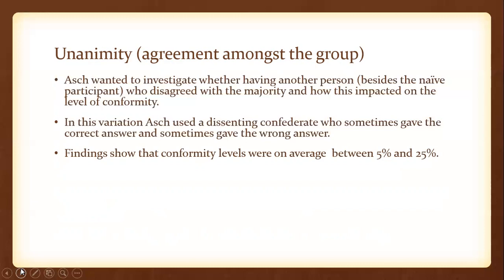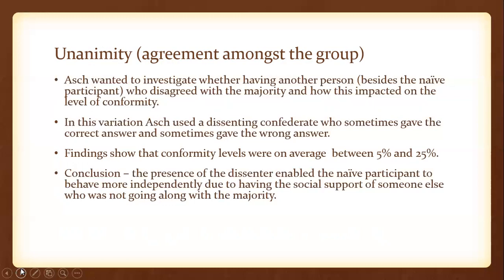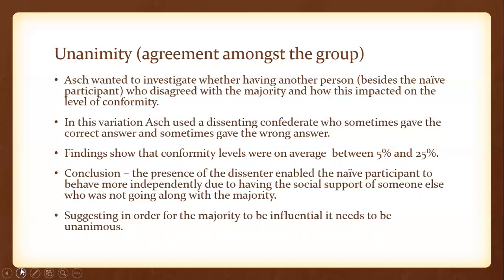Asch found that on average, conformity levels dropped between five to 25% — quite a variation. If we consider the 25% drop, the original study was 36.8%, so there's quite a significant decrease. The conclusion is that the presence of a dissenter enabled the naive participant to behave more independently due to having the social support of someone else who was not going along with the majority. This suggests that in order for the majority to be influential, it needs to be unanimous — without unanimity, it doesn't have as much power or pressure on individuals.